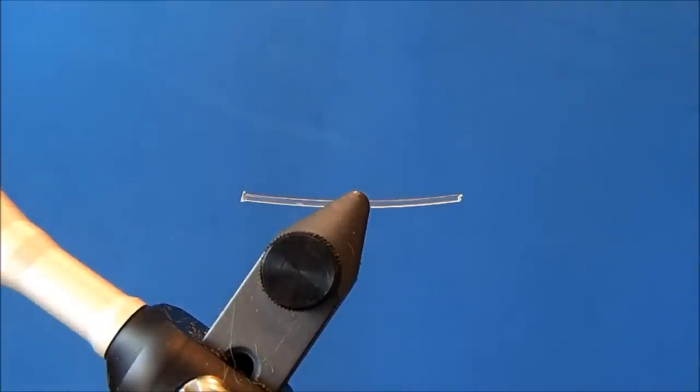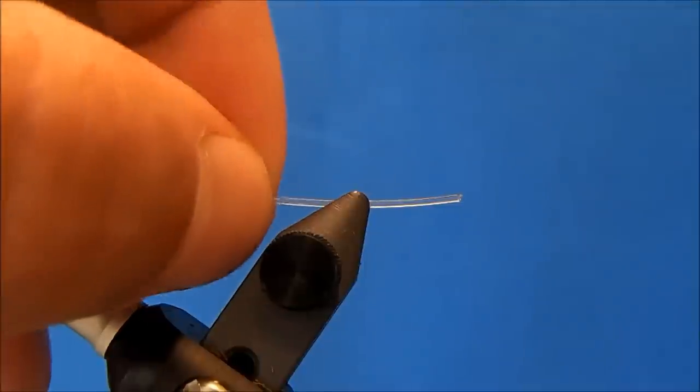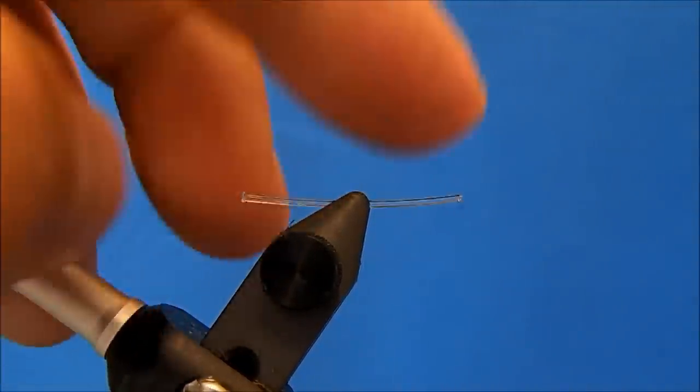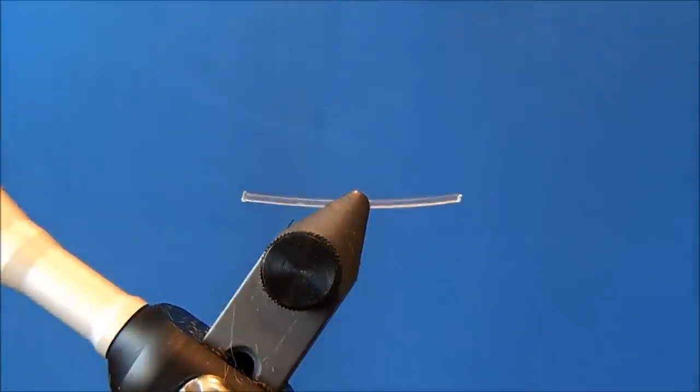I'm going to do a quick tutorial on how to make monofilament eyes and a couple of variables to consider. One is the thickness of the line, so you can go anywhere from I'd say 12 pound monofilament up to what I have in the vise, which is 50 pound.